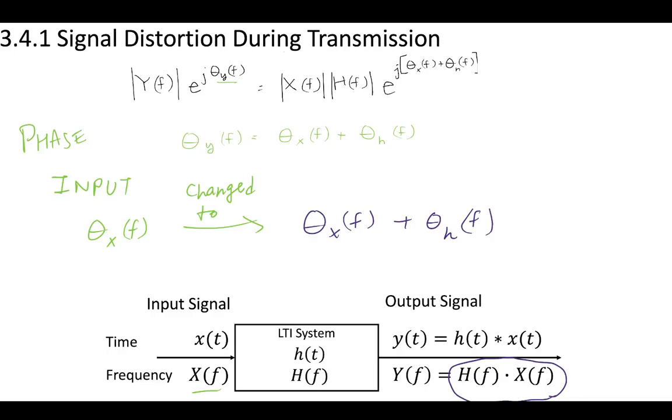What about phase angle distortion? If we have this input phase angle, theta x, at the output this would be modified into theta x plus some theta h. This theta h comes from our system, from the communication system somewhere. This term is where distortion would come from in your communication channel. This would be a type of phase distortion.